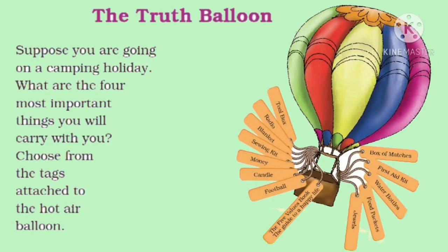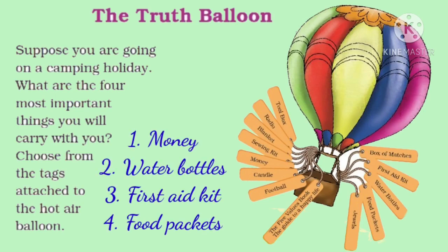Next exercise question is the Truth Balloon. Kids, suppose you are going on a camping holiday — what are the four most important things you will carry with you? Choose from the tags attached to the hot air balloon. The four most important things we will carry are: money, water bottles, a first aid kit, and food packets.